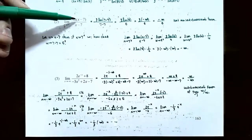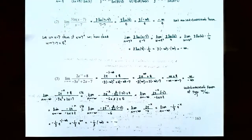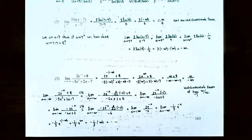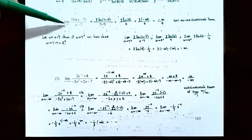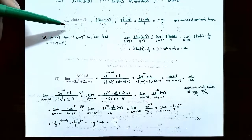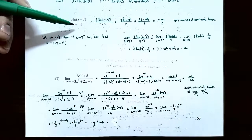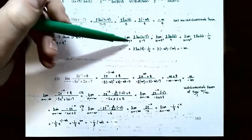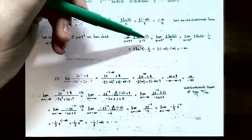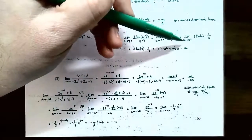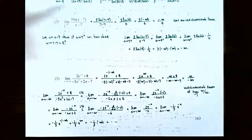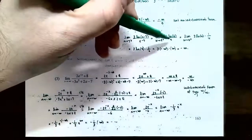Notice that (x − 7) appears both as the argument of the logarithm and in the denominator. Let's use a substitution: let u = x − 7. Since x is approaching 7 from the right, u is approaching 0 from the right. So we can rewrite the limit as x approaches 7⁺ of 3·ln(x − 7)/(x − 7) as the limit as u approaches 0⁺ of 3·ln(u)/u. This becomes the limit as u approaches 0⁺ of 3·ln(u) times 1/u — multiplying by the reciprocal of the denominator.